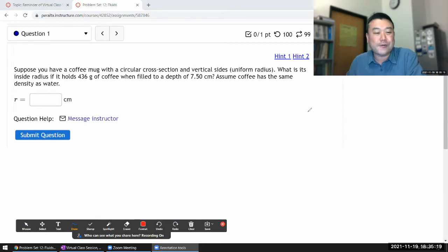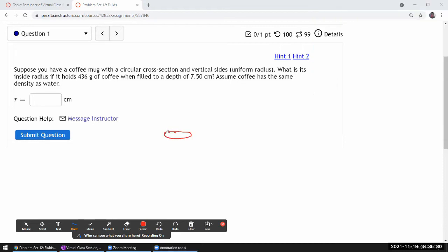Okay let me just work through the questions. So the first question says suppose you have some coffee mug with a circular cross section and vertical sides. Okay that's a cylinder with the base of a circle.